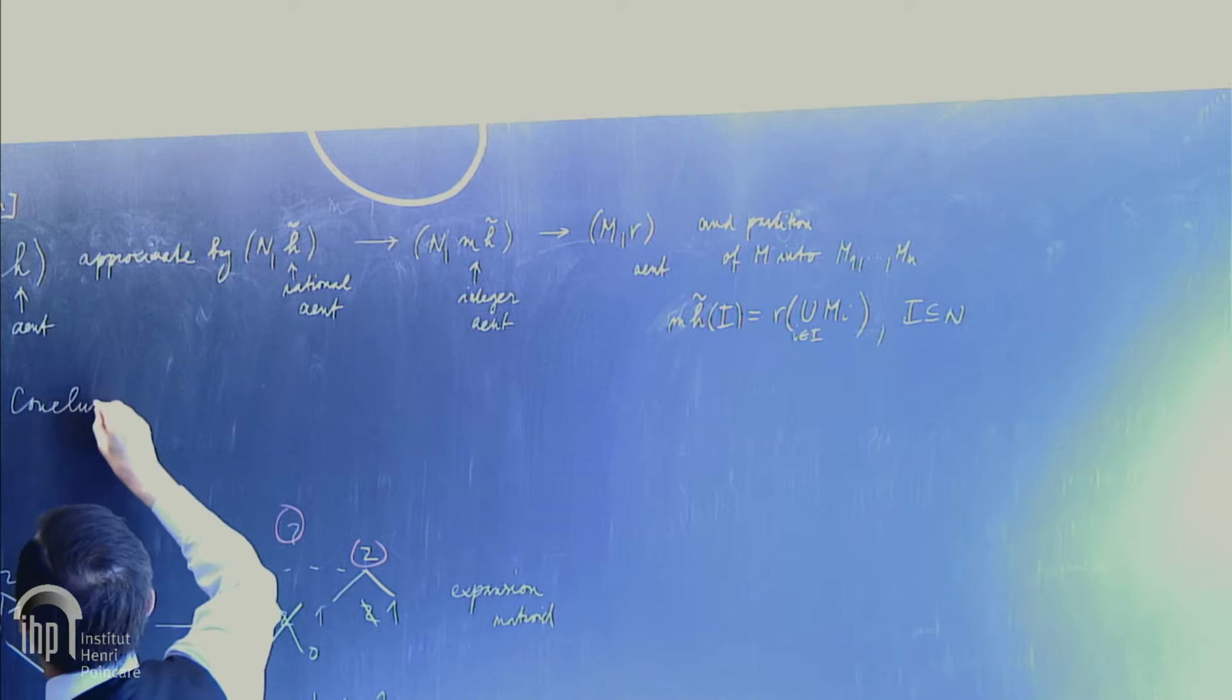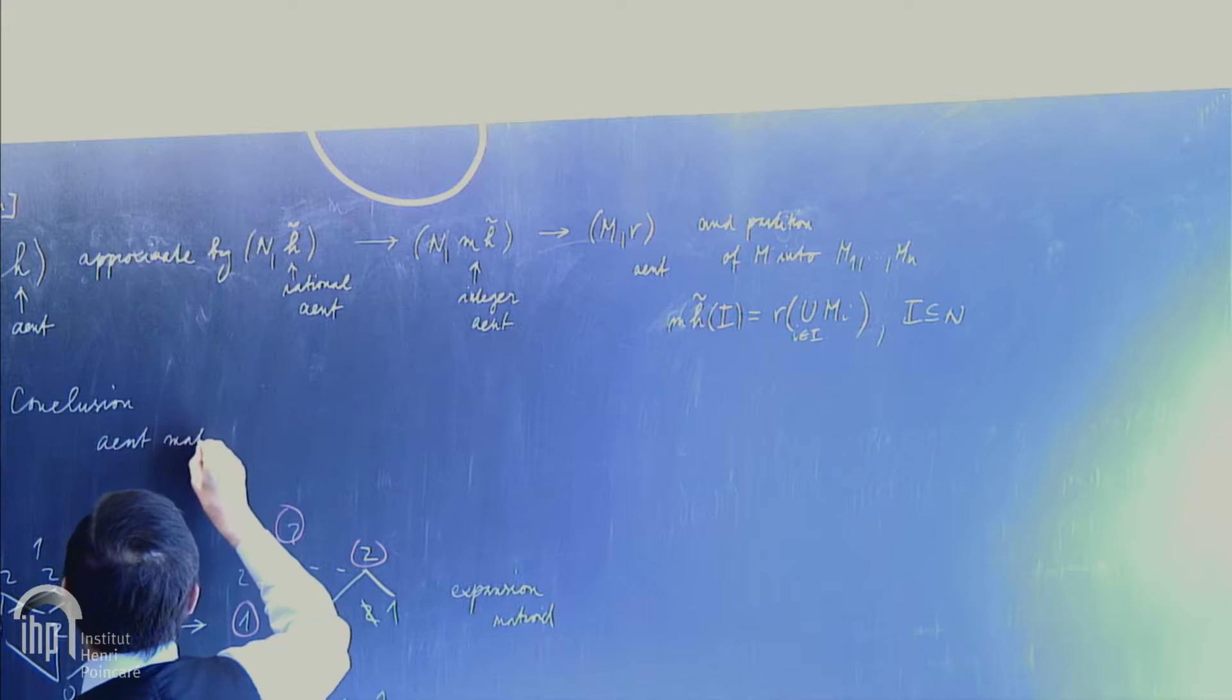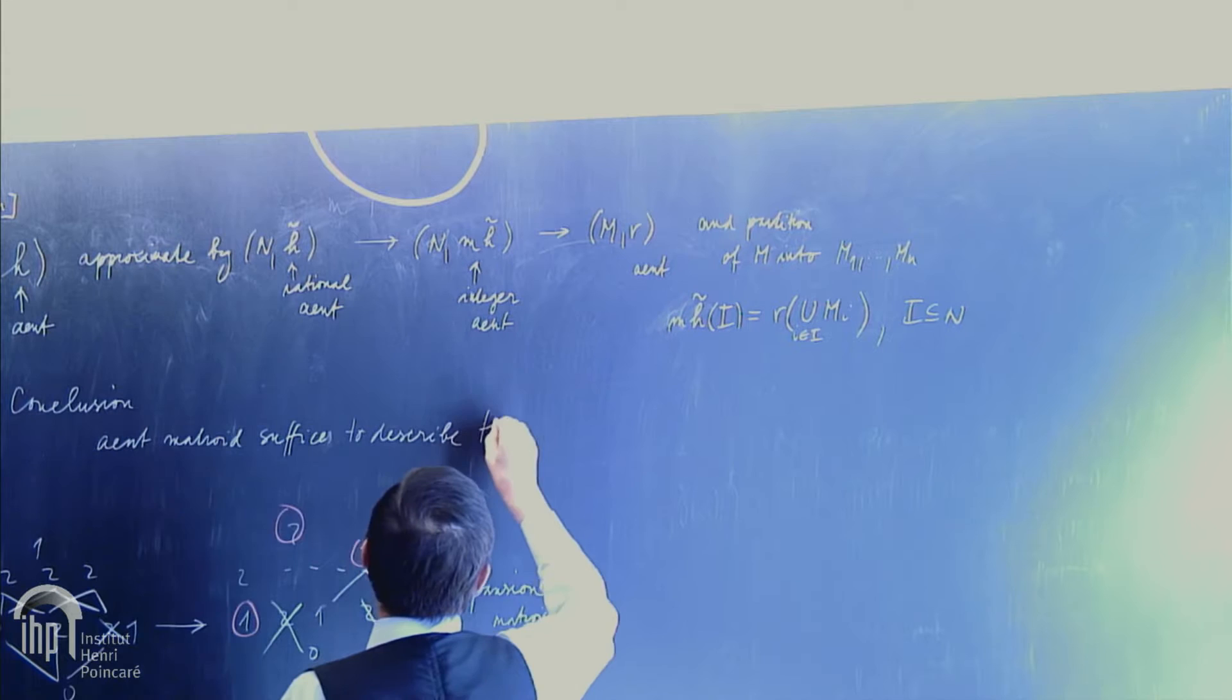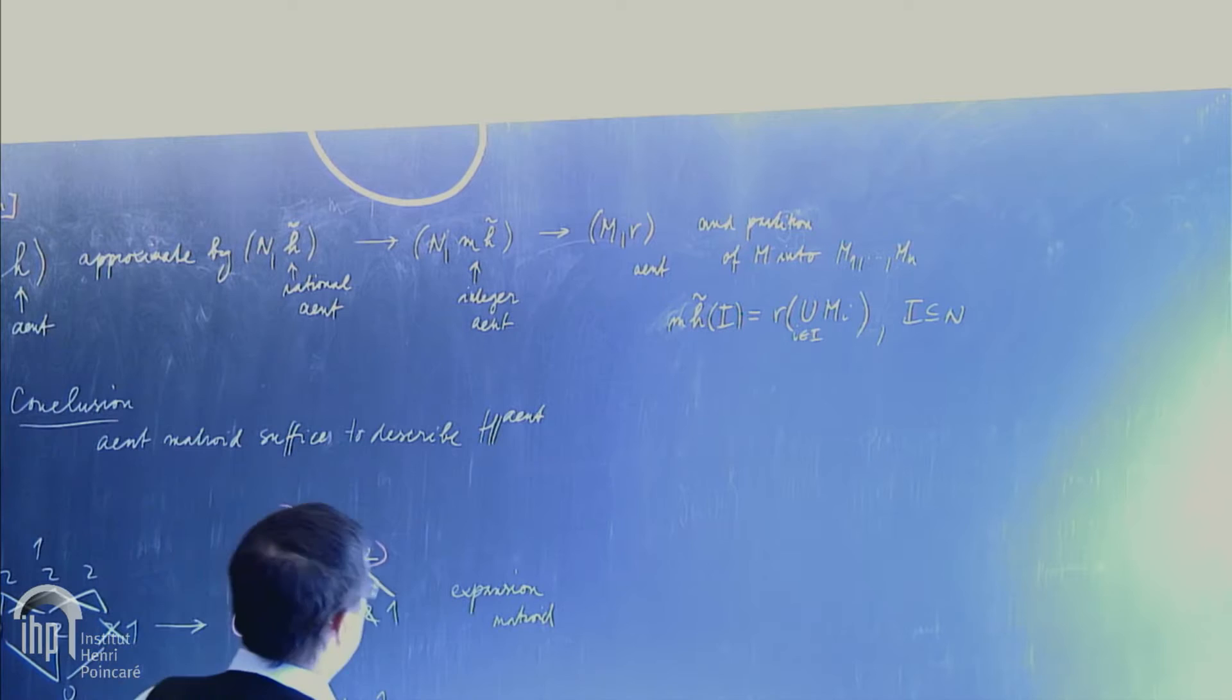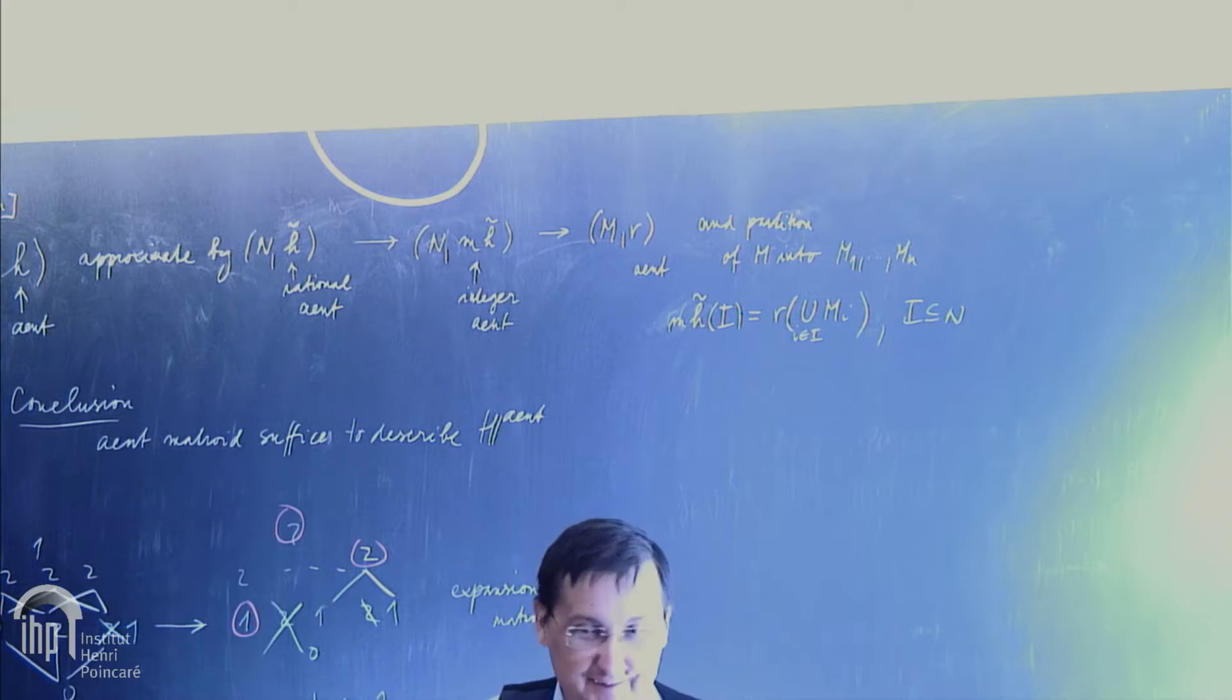So conclusion is... Almost entropic... Matroids... Suffice... To describe... The region. And this is a complementary to what... What you did with groups. Yes. With groups... You did... Okay. Subgroups of symmetric groups suffice to... Describe the entropic region.